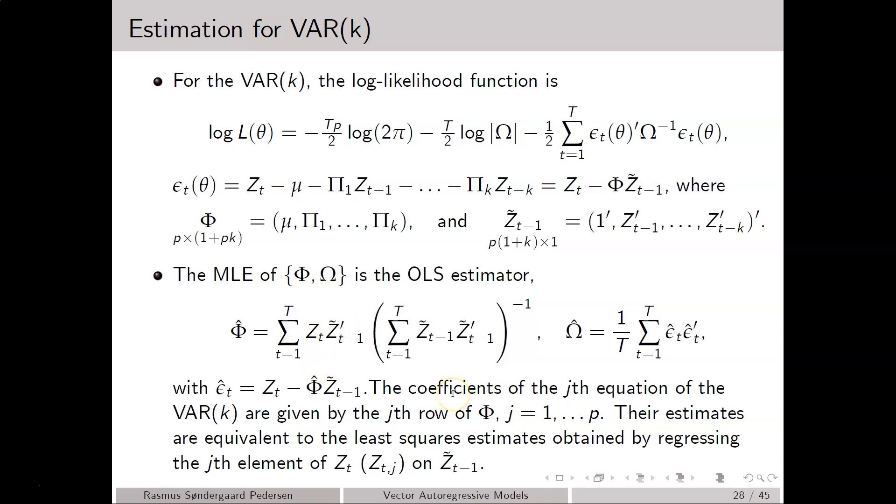Note here the coefficients for one of the equations in the VAR(k) model, say the jth equation, is simply obtained by regressing the jth element of Z_T, say denoted Z_{T,j}, on Z_{T-1} tilde. This means that when we estimate a VAR(k) model, we can simply just estimate each equation by least squares estimation.